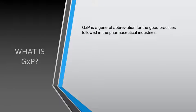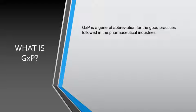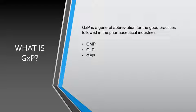Now we will discuss what GXP means. GXP is a general abbreviation for the good practices followed in the pharmaceutical industries. The X word in GXP is variable based on the different types of good practices. For example, GMP that is called good manufacturing practices, GLP that is called good laboratory practices, GEP that is called good engineering practices, and GDP that is called good documentation practices. These are a few examples of the different types of good practices followed in the GXP environment.